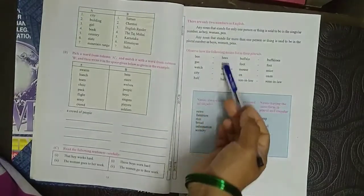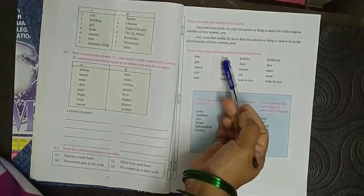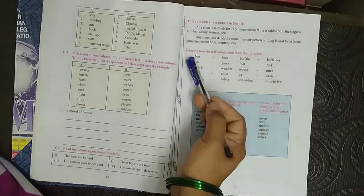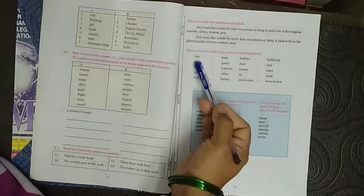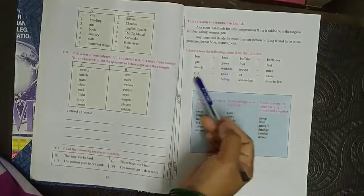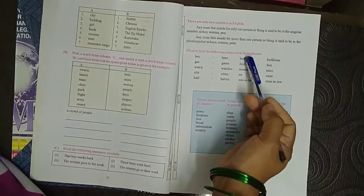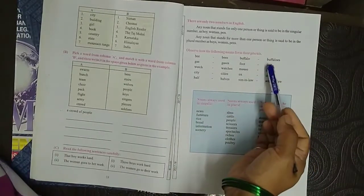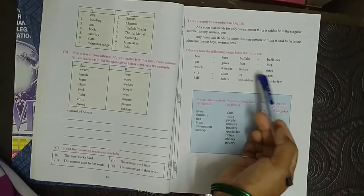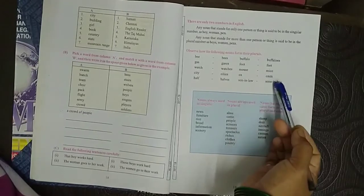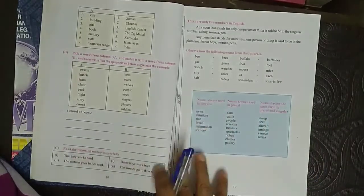Here there are some examples like bee becomes bees in singular, bee; bees is plural. Gas, gases; watch, watches; city, cities; half, halves; buffalo, buffaloes; foot, feet; mouse, mice; ox, oxen; son-in-law and sons-in-law.